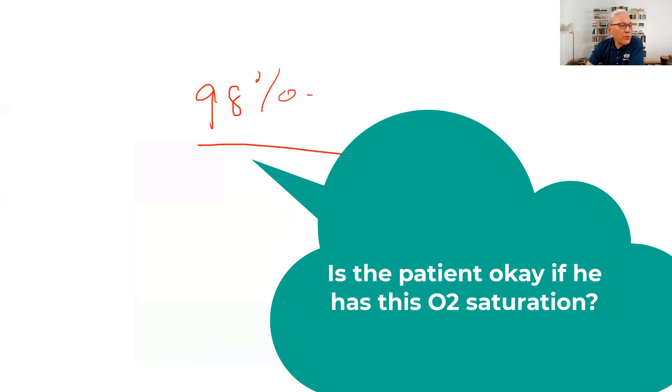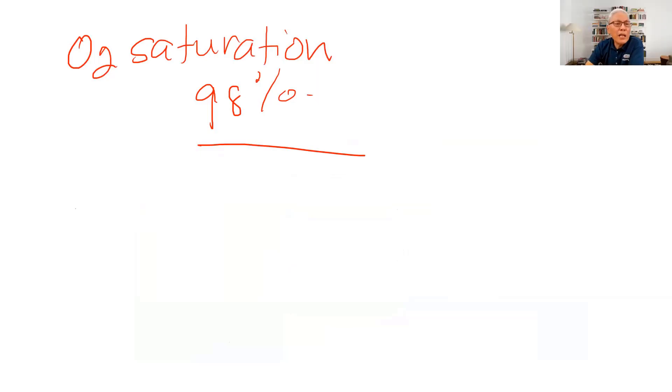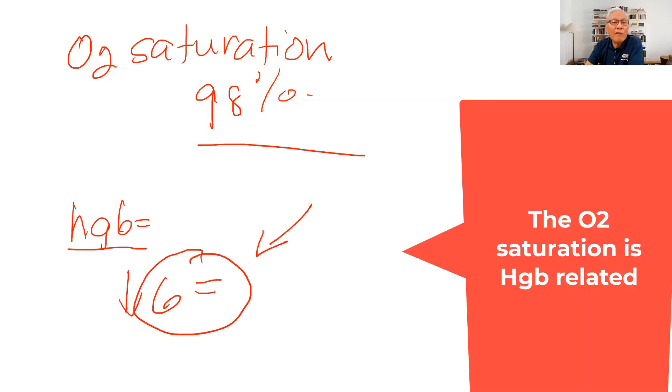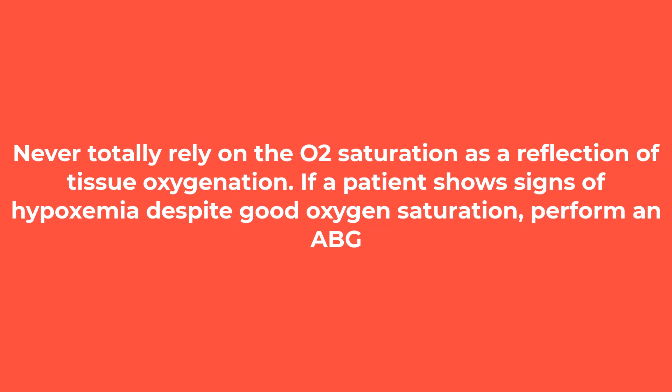If a patient's O2 saturation is 98, does it mean the patient is doing okay? In general, it is — but consider if the patient's hemoglobin is only six grams. If all six grams of hemoglobin is packed with oxygen, it will show 100% saturation. However, a hemoglobin of six is not enough to distribute oxygen to all parts of the body. So remember: you should not be blinded by a normal O2 saturation. A patient can have 100% O2 saturation and still be hypoxic.